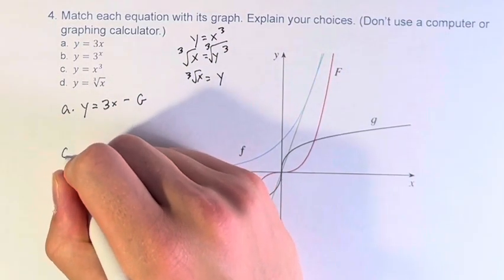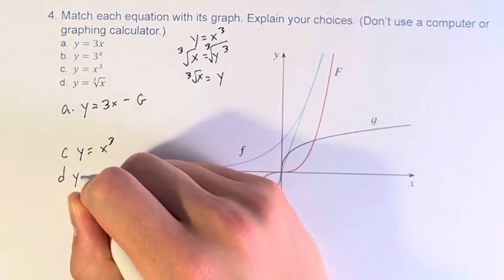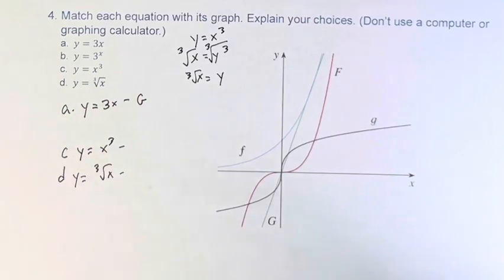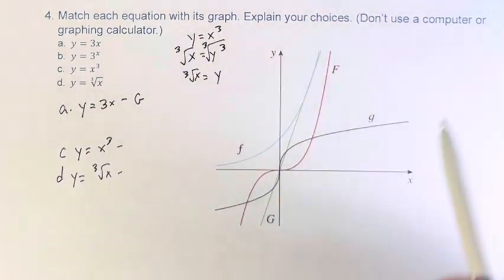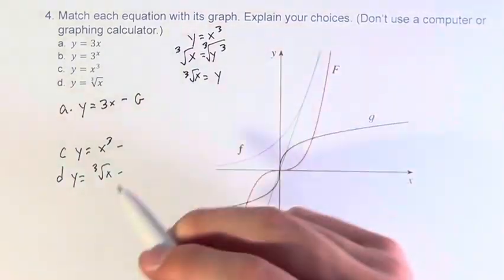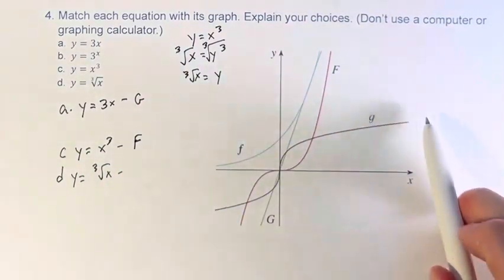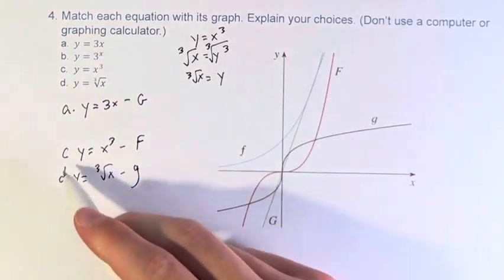So for c and d, y equals x cubed and y equals the cube root of x. Now we have to use our knowledge of the basic shape of common functions. So f is shaped like a power function, so therefore capital F represents x cubed. And g is the inverse of that, y equals the cube root of x, so lowercase g represents d.